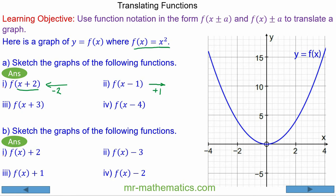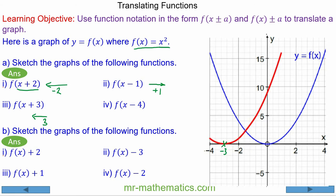For the next question, we're going to translate the function to the left by 3 units, so the turning point becomes at x equals negative 3. You can see the whole function has been moved to the left by 3 units.